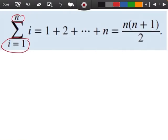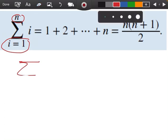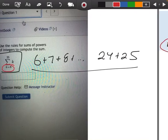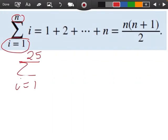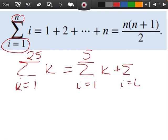But I want you to think about this. If we were starting from 1 all the way to 25 of the number K, this here would really be the same thing as if I started at 1 and went up to 5, and then I started up at 6 and went all the way to 25. So I want you to think about what we did here.